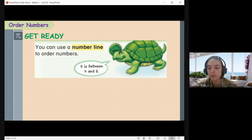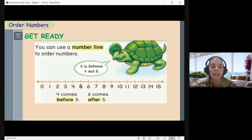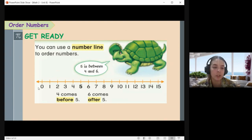All right, so if we look at this number line, it goes zero, one, two, three, four, five, six, seven, eight, nine, ten, eleven, twelve, thirteen, fourteen, fifteen. So if we look, it says five is between four and six. So we look at five and then we see four is on the left, six is on the right.